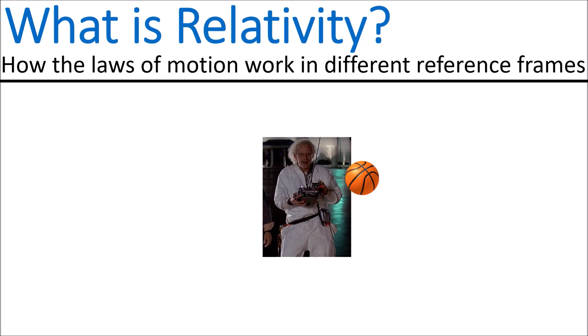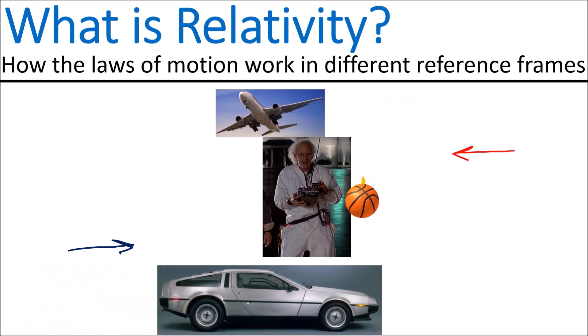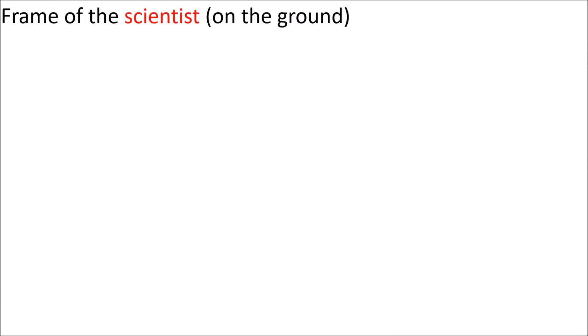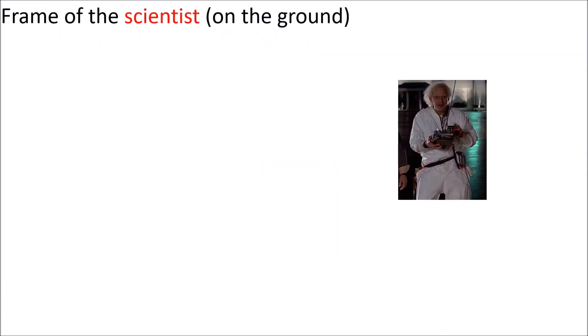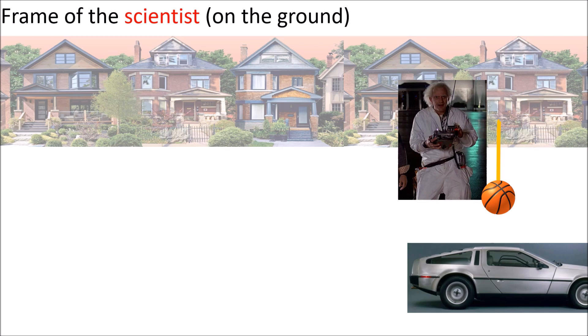To understand what the Galilean principle of relativity means, let's look at an example of a scientist standing on the ground dropping a ball. To the scientist, the ball appears to be falling straight down toward the ground. But other observers — such as a person driving a car at a constant speed toward the right, or a passenger in an airplane traveling at a constant speed toward the left — will see things differently, because they have different frames of reference.